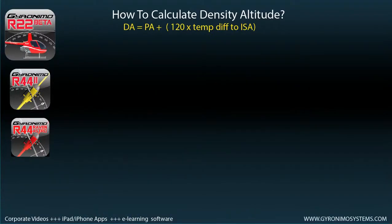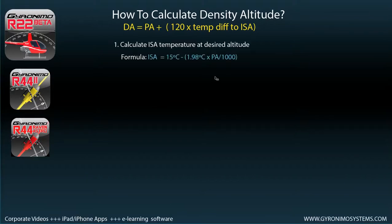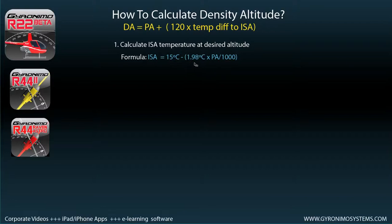Let's put this away for a second and go through the necessary steps. First, you need to calculate the ISA temperature at the desired altitude. The formula is ISA = 15 degrees minus a lapse rate. Every time we climb 1,000 feet, the temperature drops by about 2 degrees Celsius — more precisely, 1.98 degrees Celsius per 1,000 feet.